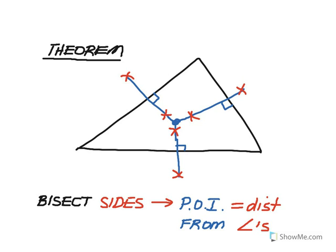On the flip side, the next theorem is about when we bisect the sides of a triangle. All of those perpendicular bisectors are also concurrent — they meet at one point of intersection in the middle of the triangle, and that point is equidistant from the angles of the triangle. So in the prior theorem we bisect angles and the point of intersection is equidistant from the sides. In this theorem we bisect sides and the point of intersection is equidistant from the angles.